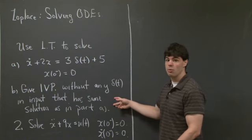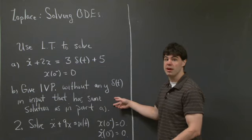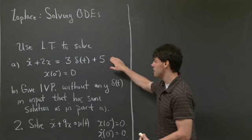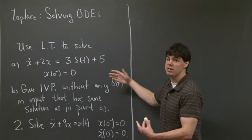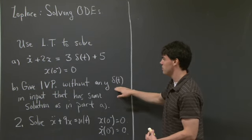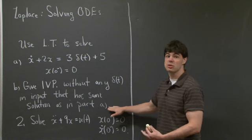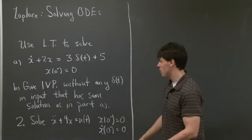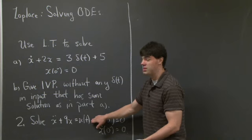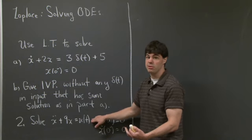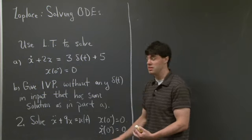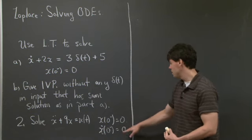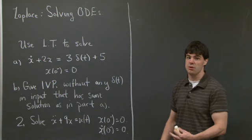For part b, we're asked to find an equivalent initial value problem without any delta function forcing on the right-hand side, but which yields the same solution as in part a. Then in question 2, we're asked to solve the second order differential equation x_dot_dot plus 9x equals u of t, with rest initial conditions: x of 0 minus equals 0 and x_dot of 0 minus equals 0.